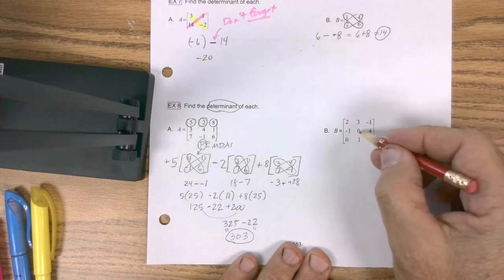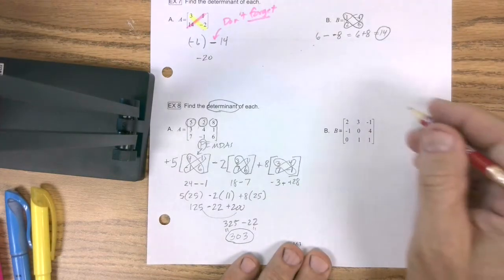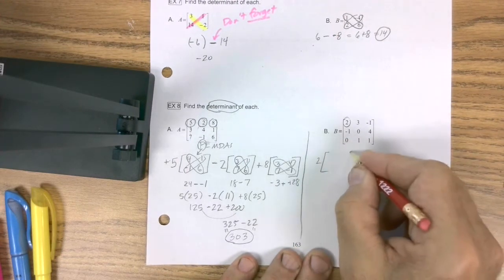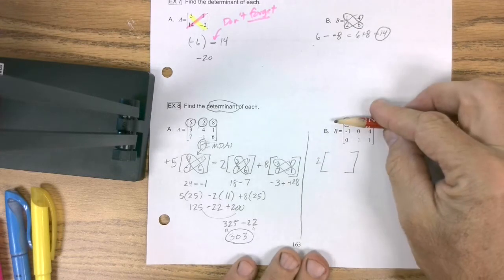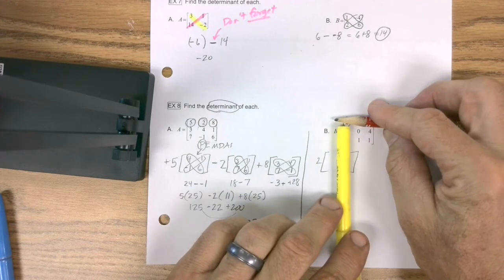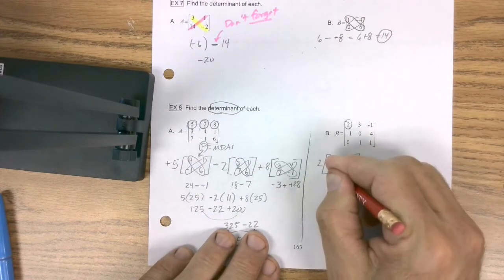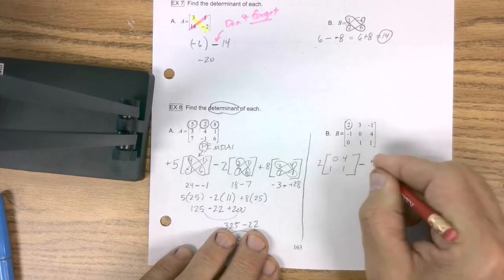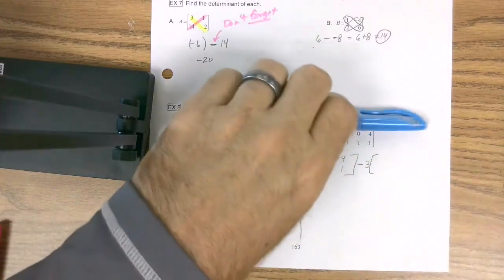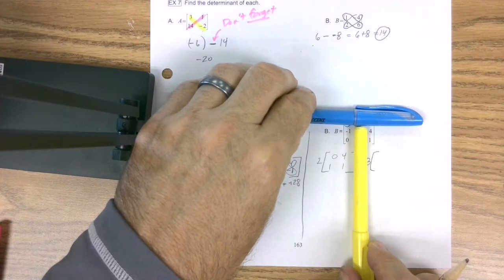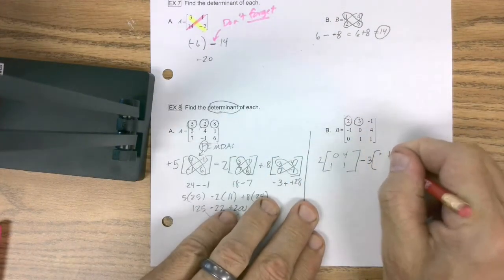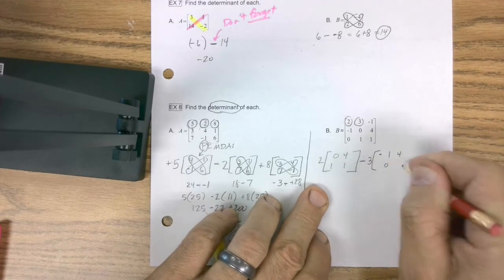So here's a second example. You've got to love these zeros because they just knock things out for us. But we're going to peel that out. And we're going to do our little pencil trick here. So then we take a line to the right, a line underneath it. And there's our 2 by 2, 0, 4, 1, 1. Always a minus. And we take out the second item in our first row. And we're left with negative 1, 4, 0, 1.